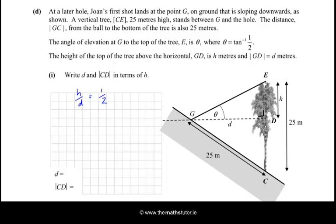The height of the top of the tree above the horizontal GD is H metres and GD is D metres. OK, so write D and CD in terms of H. Well, D, because of this equation here, I can cross multiply. So, we have D = 2H. And also, we are looking for CD, which is this distance here. Well, that is going to be 25 - H. So, CD = 25 - H. So, I just need to write my answers into the correct space down here.